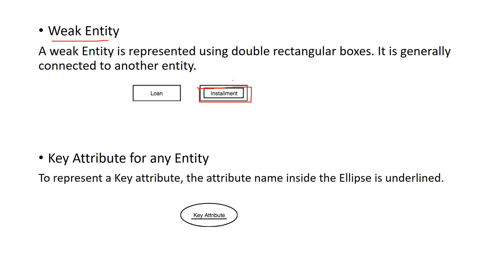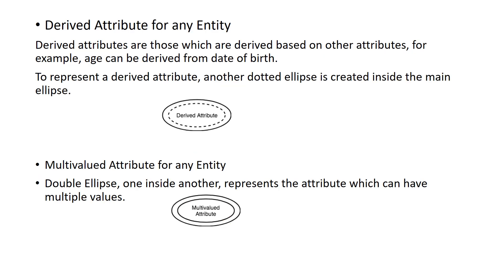If we have a weak entity, we have key attributes instead of a primary key. Key attributes are represented inside an ellipse for the weak entity.